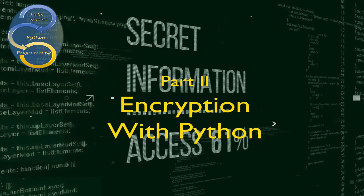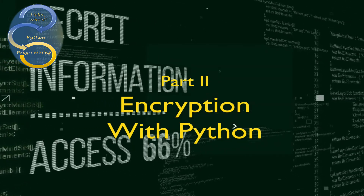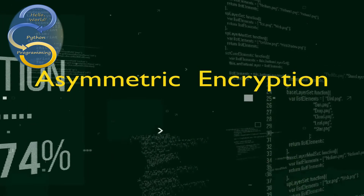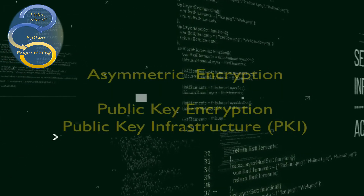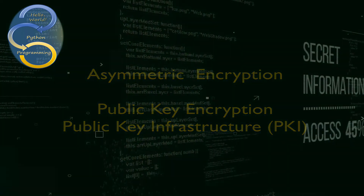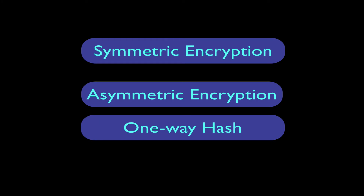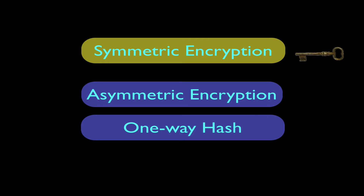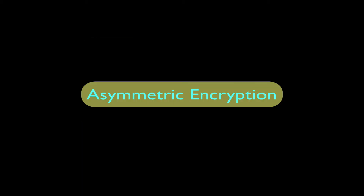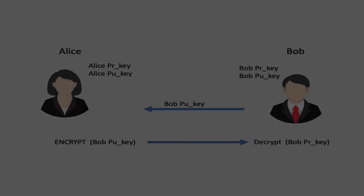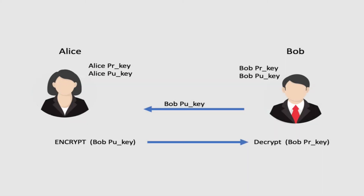Hi everyone, welcome back to part 2 of my series of videos on encryption with Python. In this video we're going to look at asymmetric encryption, which is often referred to as public key encryption or public key infrastructure, PKI. If you remember from part 1, there are basically three types of encryption. We already covered symmetric encryption, which uses one key to encrypt data. Now we're going to focus on asymmetric encryption, which uses key pairs — private and public keys. We'll see an example in Python of how the key pairs are related by encrypting information with our public key and decrypting it with our private key. Finally, we'll see how to use public key encryption to share keys to send encrypted data securely.